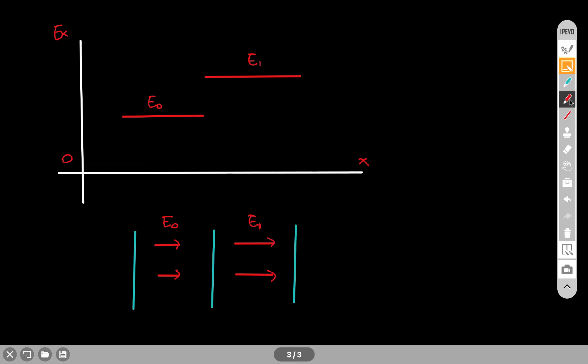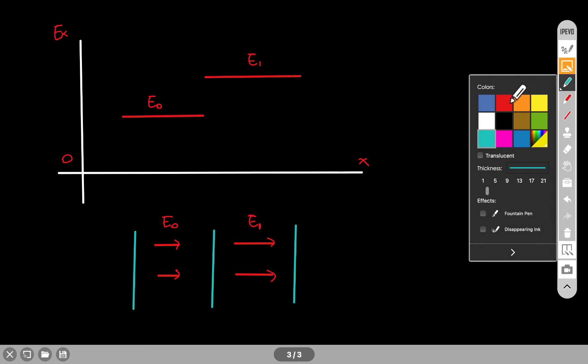Now, if I say that point A is right here and point B is right there, and I say what I want to find is VB minus VA. I want to find this potential difference.